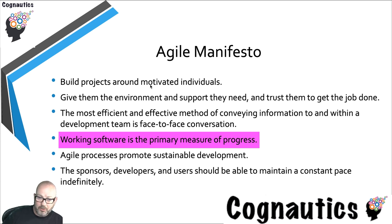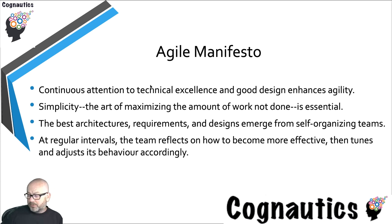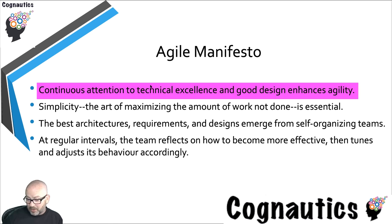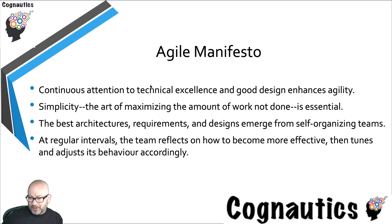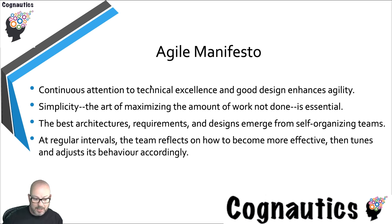Delivering the customer working iterations of software as regularly as possible is what this is all about. The last part of the agile manifesto talks about good design — good design enhances agility, it should be simple, and the aim is to do as little work as possible to provide the highest quality software. Some of the agile methodology sounds woolly, but it's about less paperwork, less documentation, not worrying about risk, and producing as many iterations as possible to give the customer what they need as soon as possible. There's also this idea of reflection.